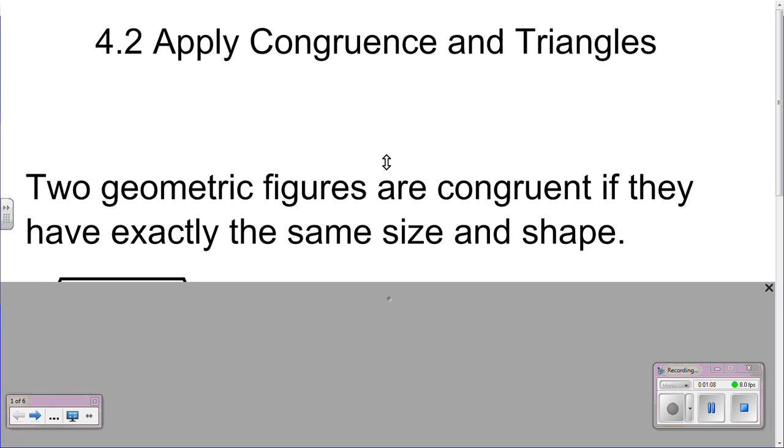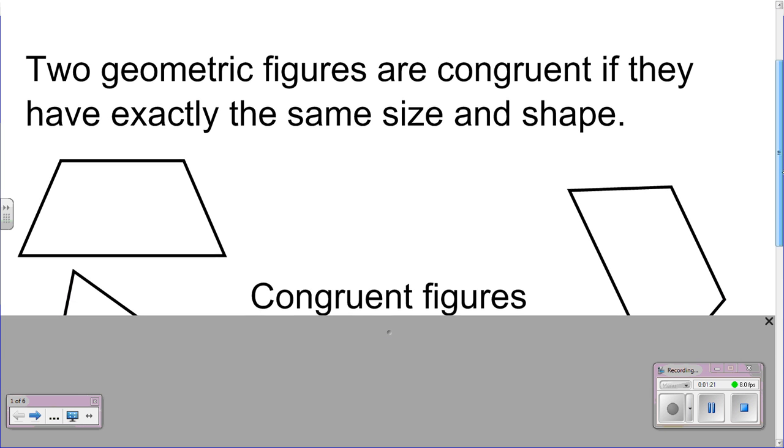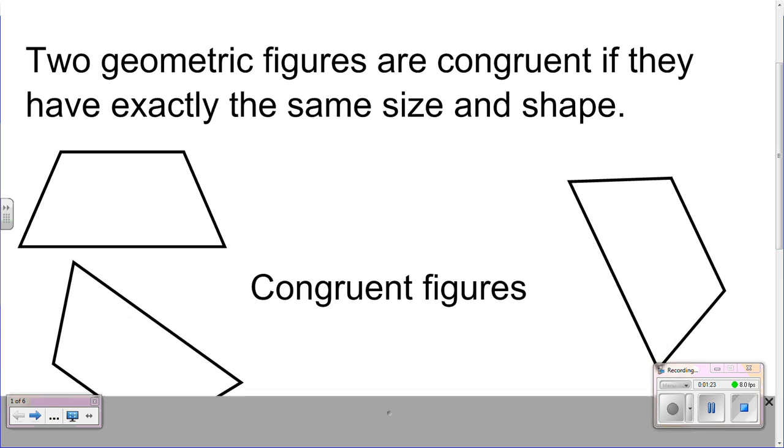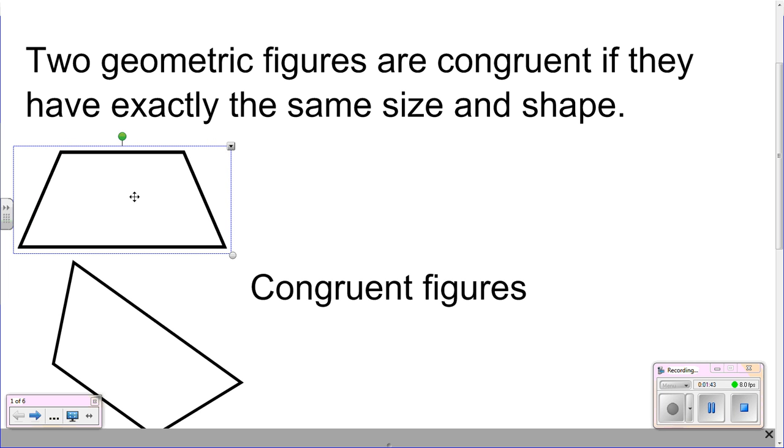Now we're going to move forward into shapes along with congruence. As we look to apply congruence to triangles, two geometric figures are congruent if they have exactly the same size and shape. So we're looking at congruence here. These would all be congruent figures. It does not matter that this one is over here and turned sideways, it doesn't make a difference. It's still the same exact size and shape as this one.